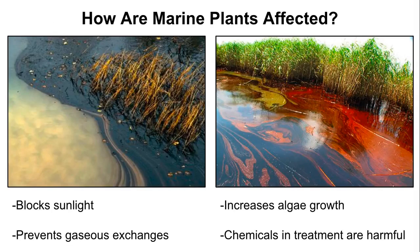How are marine plants affected? Oil blocks sunlight from entering the water, and therefore plants are unable to photosynthesize and eventually starve. Spills also prevent gaseous exchange, meaning their oxygen supply is cut off. While oil spills stunt plant growth, they actually increase algae growth, creating adverse conditions that make it difficult for marine plants to grow.